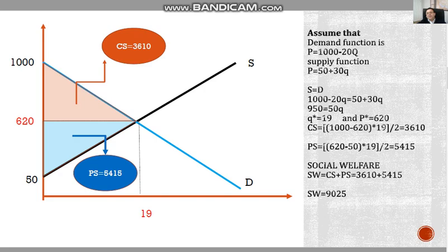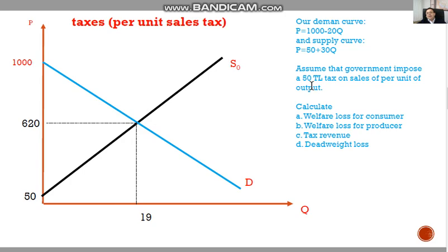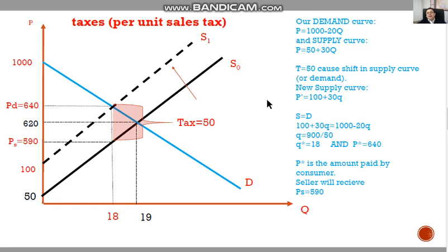Assume that government is implementing a 50 Turkish lira sales tax on this commodity. If we implement this 50 Turkish lira sales tax, our supply curve is going to shift to the left. As a reminder, you can also add this tax on the demand curve and you will get the same result.